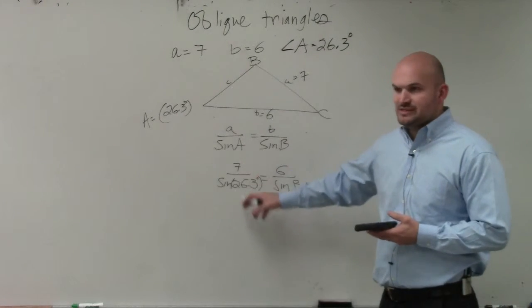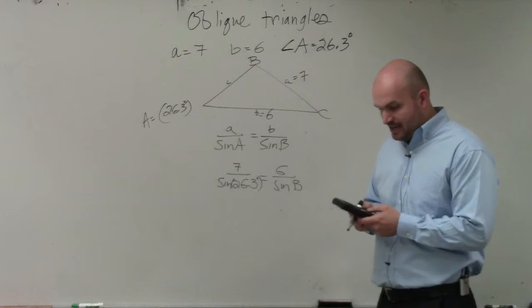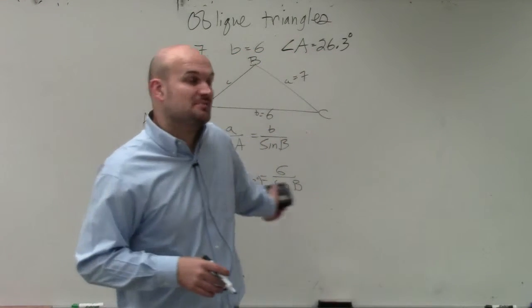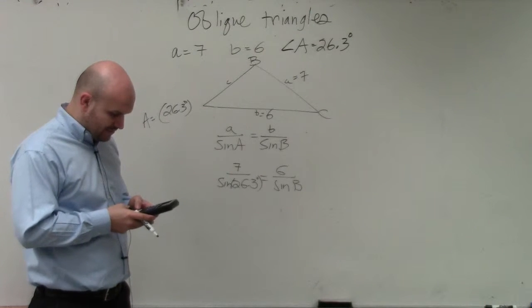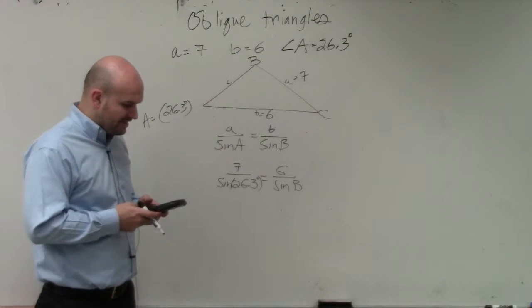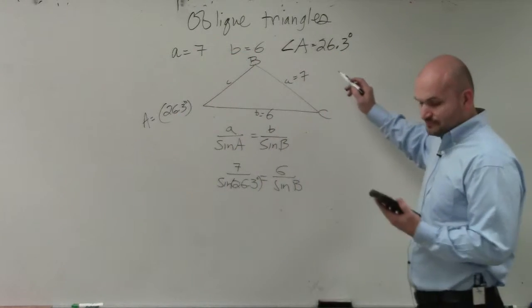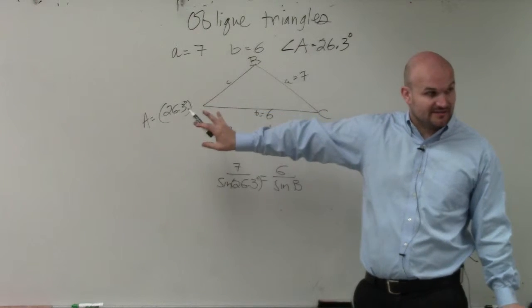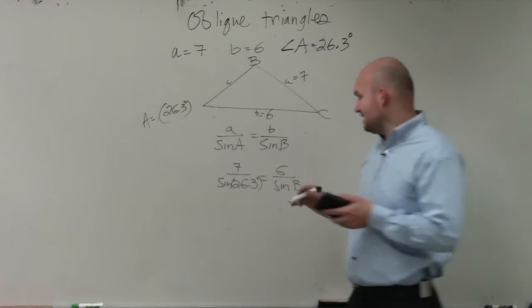One way I would do is we can always evaluate this. So I can just take 7 divided by, I want to make sure my calculator is in degree mode, since 26.3 is degrees. So I'm going to do divided by the sine of 26.3 degrees. And that's 15.78. Since I'm rounding to the tenth decimal, I'm just going to leave it from here. So therefore, that'd be 15.8.